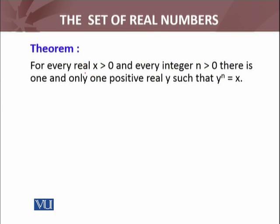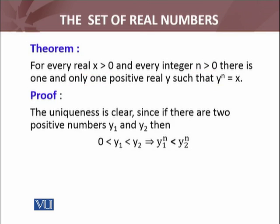The theorem states that for every real number x greater than 0 and every integer n greater than 0, there is one and only one positive real number y such that y raised to power n equals x. The proof has different steps. The first step is about uniqueness. The uniqueness is clear, since if there are two positive numbers y₁ and y₂ such that both satisfy the equation, then y₁^n equals x and y₂^n equals x, and y₁ and y₂ are real numbers, and real numbers form an ordered field.